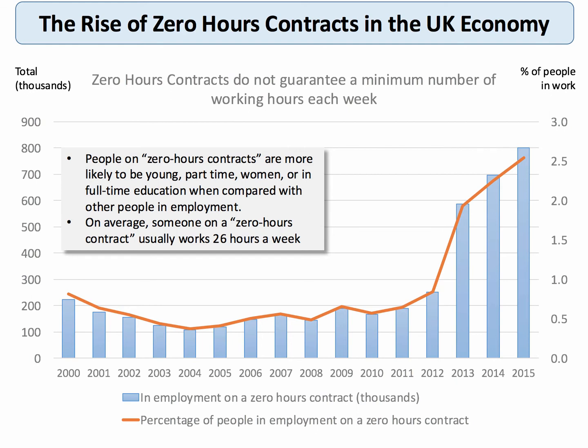Linked to this is the increasing flexibility of employment contracts and the rise of zero-hours contracts. People on zero-hours contracts are not guaranteed any minimum number of hours per week. On average they actually work about 24–26 hours a week, and about one-third of people on them would like to work more. Typically, people on zero-hours contracts tend to be younger, often part-time, and more likely to be female. We're now at a stage where there are just under 800,000 zero-hours contracts — about 2.5% of the labour force — raising big issues about the trade-off between efficiency and flexibility and income volatility.